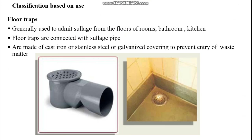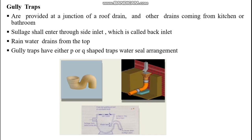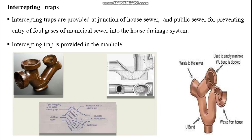Classification based on use: Floor traps are generally used to admit sullage from the floors of rooms, bathrooms, and kitchens. Floor traps are connected with sullage pipes and are made of cast iron, stainless steel, or galvanized covering to prevent entry of waste matter. Gully traps are provided at the junction of a roof drain and other drains coming from the kitchen or bathroom. Solid matter shall enter through the side inlet, which is called the back inlet, while rainwater drains from the top. Gully traps have either P or Q shaped trap water seal arrangements.